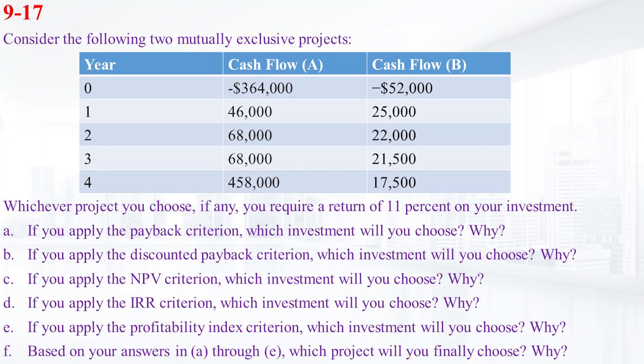Consider two mutually exclusive projects. We have given the cash flows from Project A and B for four years. Whichever project you choose, if any, you require a return of 11% on your investment. If you apply the payback period criterion, which investment will you choose and why?